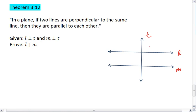So I'm given two lines, L and M, which are both perpendicular to T. I'll label these angles 1 and 2. I want to prove that L is parallel to M.